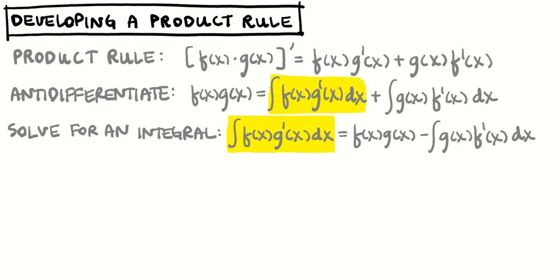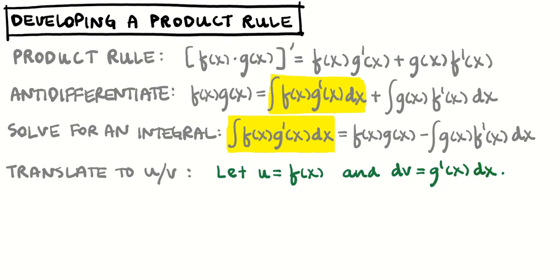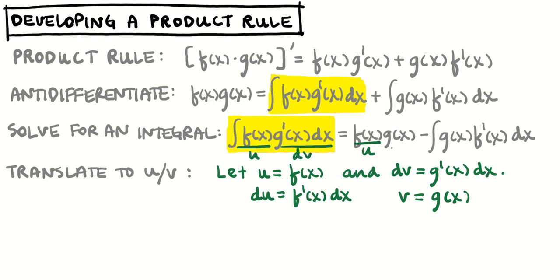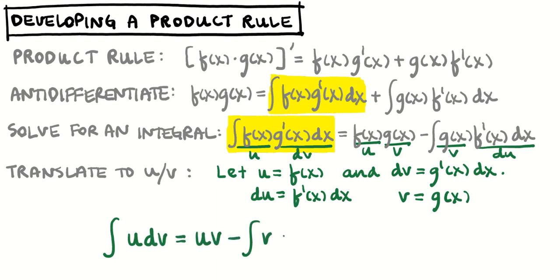We're also going to need to translate this into something we can more easily remember. So I'm going to let u equal f(x) and dv equal g prime(x) dx. I would take the derivative of u with respect to x and get du equals f prime(x) dx. And I could anti-differentiate both sides of the equation on the right and say that v equals g(x). Then when I go to translate: this is u, this was dv, this is u, that's v, g is v, and f prime(x) dx is du. So we can translate this into the integral of u dv equals u times v minus the integral of v du.